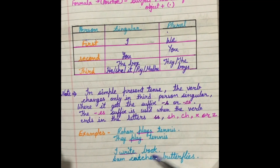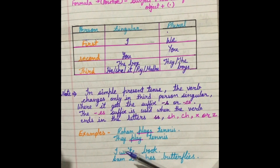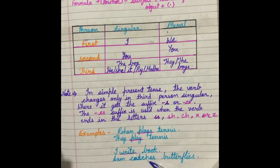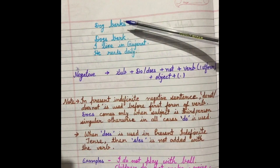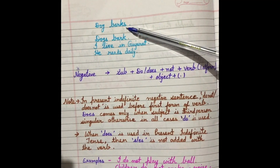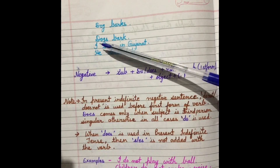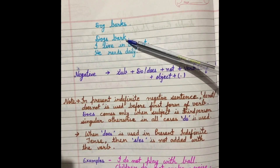I write a book. I is singular but it is first person, and as I told you, only with third person singular do we add s or es. Sam catches butterflies — here the last letter is ch, so we add es: catches. Dog barks — dog is singular, so we put s with the verb. Dogs bark — the subject is plural, so we put only bark, not barks. I live in Gujarat. He reads daily.